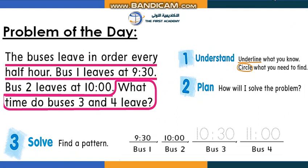The buses leave in order every half hour. Bus one leaves at 9:30, bus two leaves at 10:00. What time do buses three and four leave? We have a problem and need to solve it. Read the question carefully and try to find the pattern. The first bus leaves at 9:30 and the second bus leaves at 10:00.